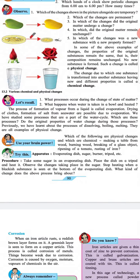What processes occur during the change of state of matter? What happens when water is taken in a bowl and heated? The process of formation of water vapor from a liquid is called evaporation. Drying of clothes, formation of salt from sea water are possible due to evaporation. We have studied some processes that are a part of the water cycle. Which are these processes? Do the original properties of water change during these processes?